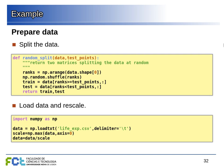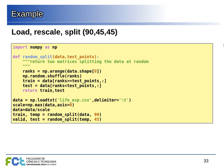Putting it together: we put the import statements first, then define the function, load the data, rescale everything, and create training, validation, and test sets — splitting 90 points for training, 45 for validation, and 45 for testing.